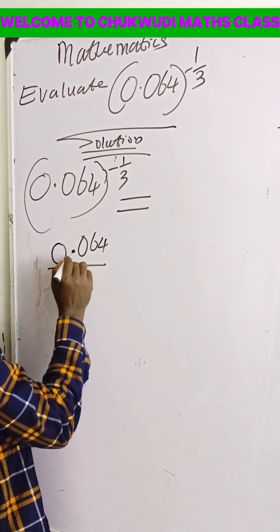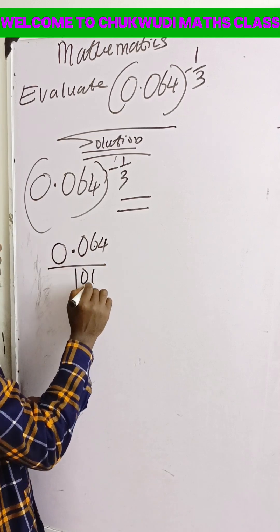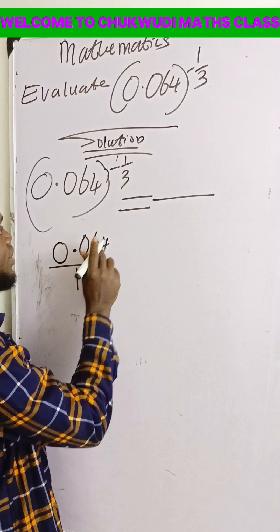You take this decimal and count the place values: one place, two places, three places for the thousandths position. And at the end of everything, you will now have 64 over 1000.